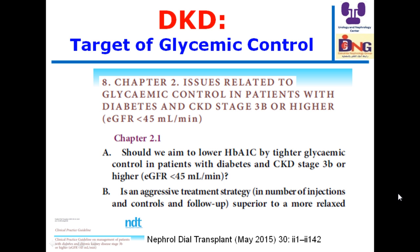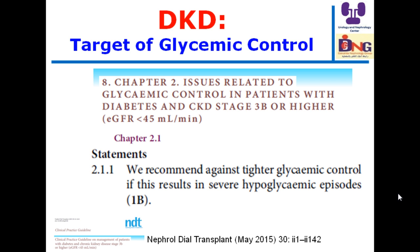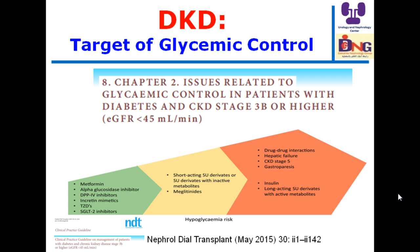The guidelines recommend against tighter glycemic control if it results in severe hypoglycemic episodes — a recommendation based on moderate evidence. As nephrologists, we must be skilled in risk stratification according to hypoglycemic risk: low risk (green) includes metformin, alpha-glucosidase inhibitors, DPP4 inhibitors, incretin mimetics, TZDs, and SGLT2 inhibitors. Moderate risk (yellow) includes short-acting sulfonylurea derivatives with inactive metabolites and meglitinides. High risk (red) includes CKD stage 5 with estimated GFR below 15, gastroparesis, insulin, and long-acting sulfonylurea derivatives with active metabolites.